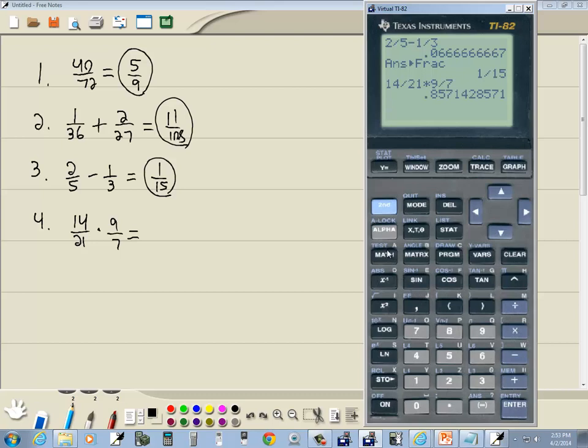Enter, and then we get a decimal. And we do math, enter, enter. And that gives us 6 sevenths.